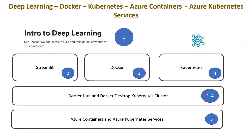Then we will build a Deep Learning model and use it in a very simple UI — the Streamlit UI. We will create an image with Docker and deploy it in Kubernetes. The infrastructure we would be using is free: Docker Hub, and on our local machine, the Docker Desktop Kubernetes cluster.